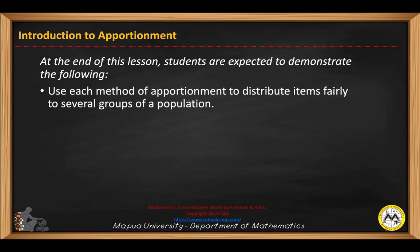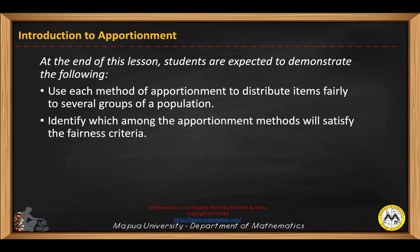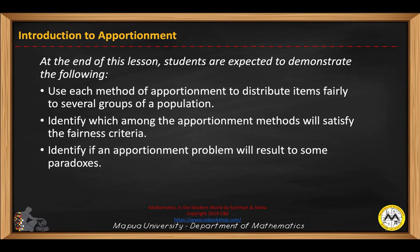Use each method of apportionment to distribute items fairly to several groups of a population. Identify which among the apportionment methods will satisfy the fairness criteria. Identify if an apportionment problem will result in some paradoxes.